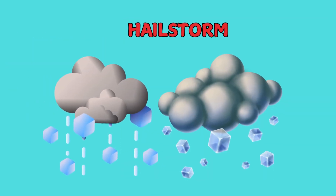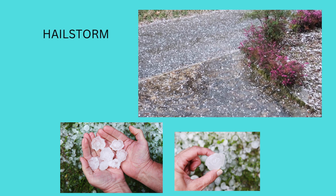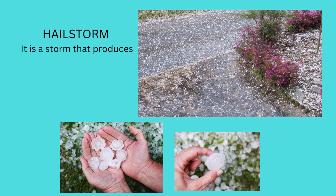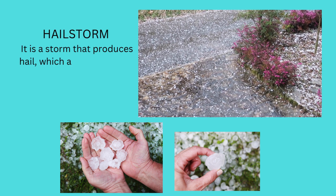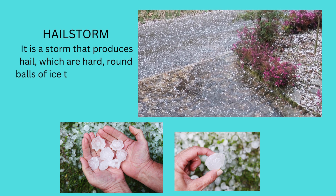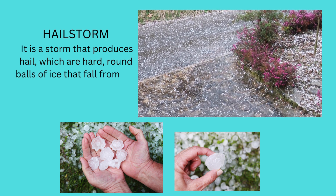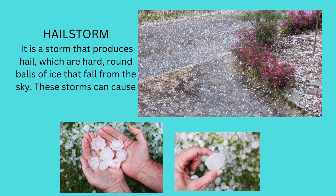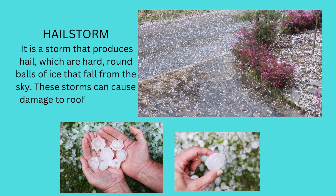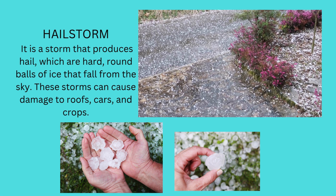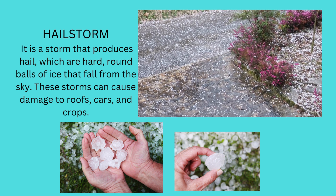Hailstorm. A hailstorm is a storm that produces hail, which are hard, round balls of ice that fall from the sky. These storms can cause damage to roofs, cars, and even crops.